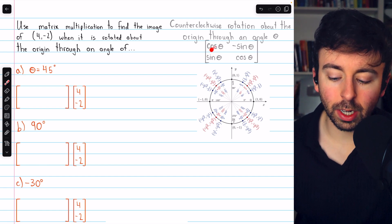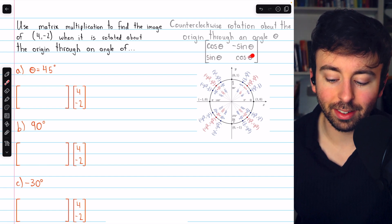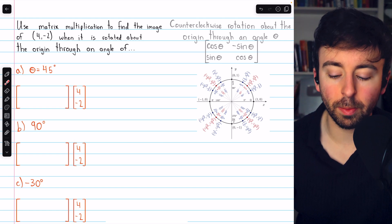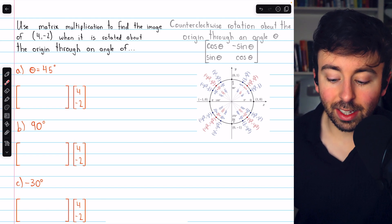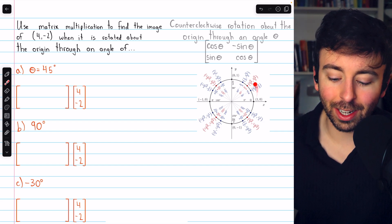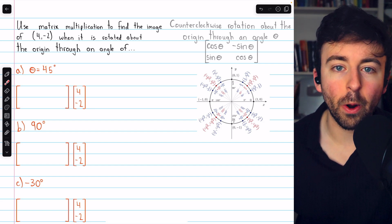A few things will be useful here. First, the standard matrix for a counterclockwise rotation about the origin through an angle of θ, which we talked about in a previous lesson. Ideally, you have the unit circle memorized, but if you don't, you're going to need that, and here it is for reference.